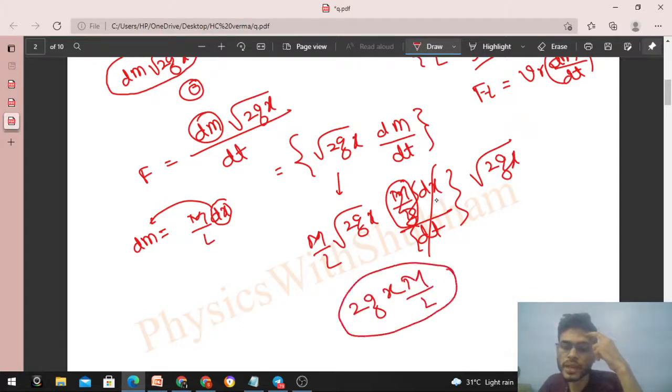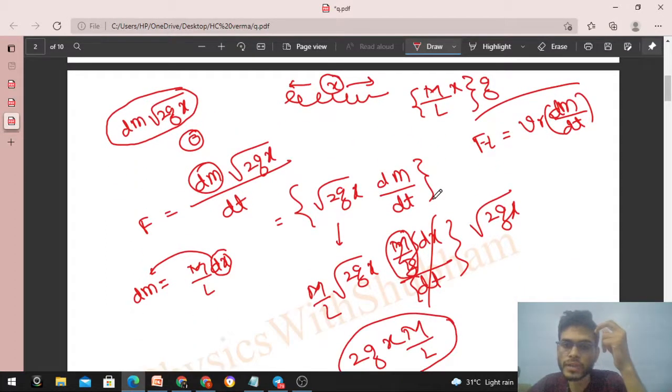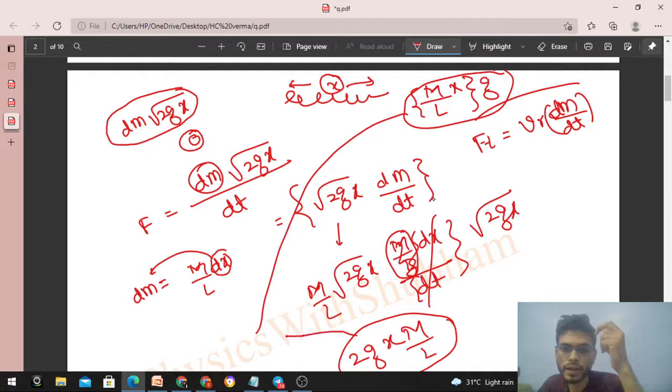So ise aapko add kar dena hai weight me - weight of the x part of the chain. Kitna aar tha ye? So in doon ko add kar do - ye aur ye ko add kar do. So jo bhi answer aa raha hai, 3gx into M by L. This is the force exerted by the chain on the floor when x part of the chain - x length of the chain - is on the floor.